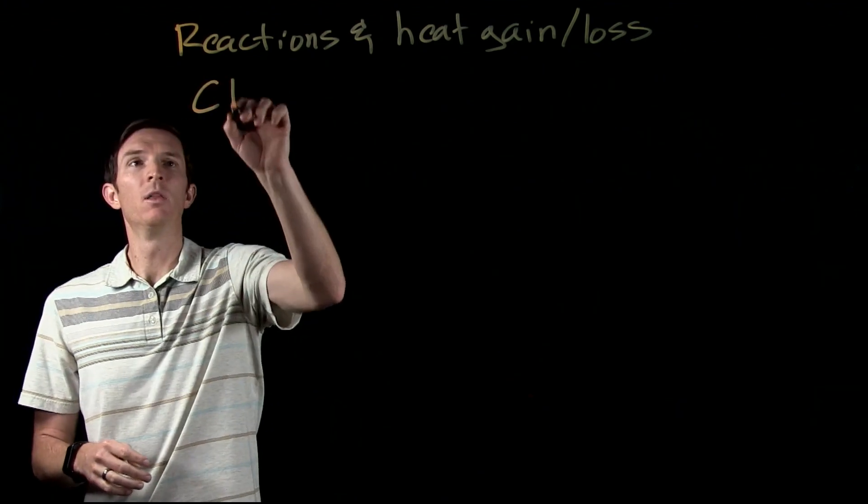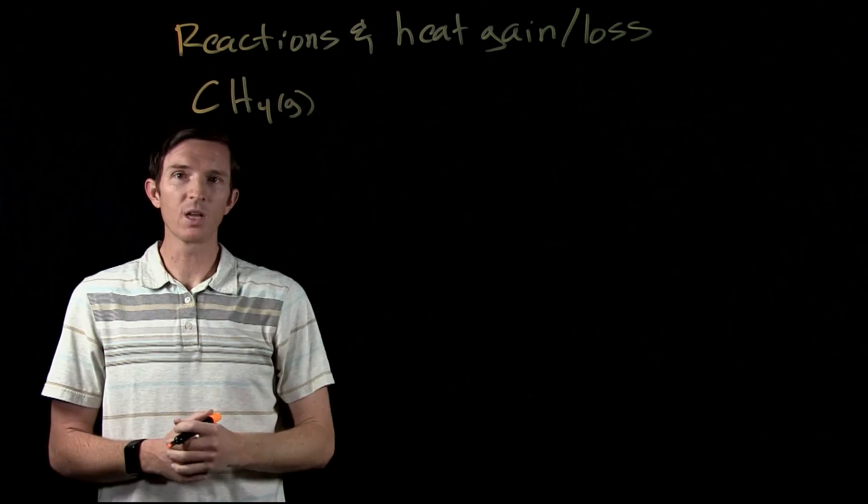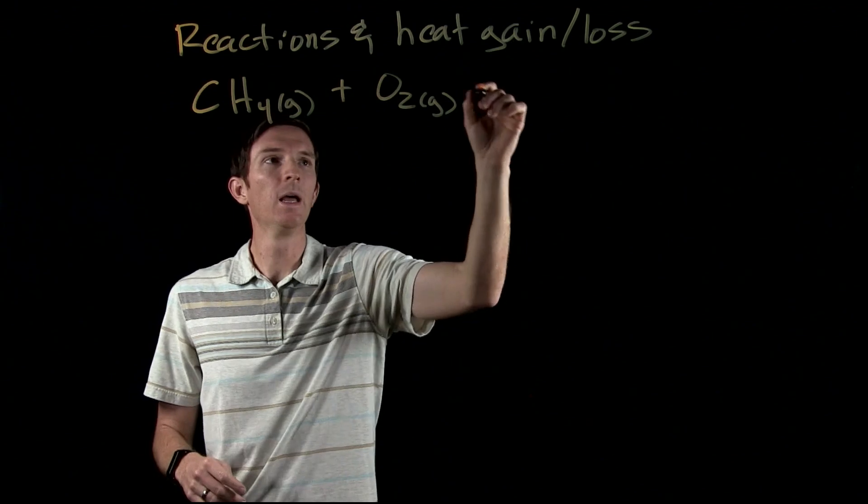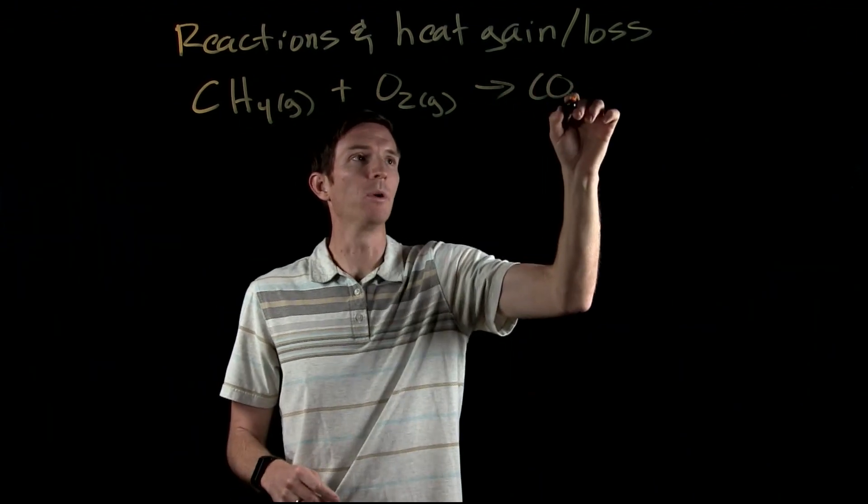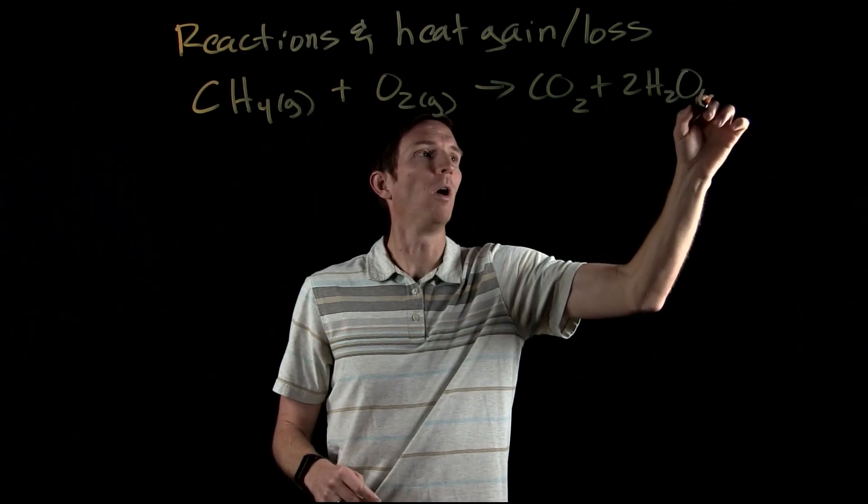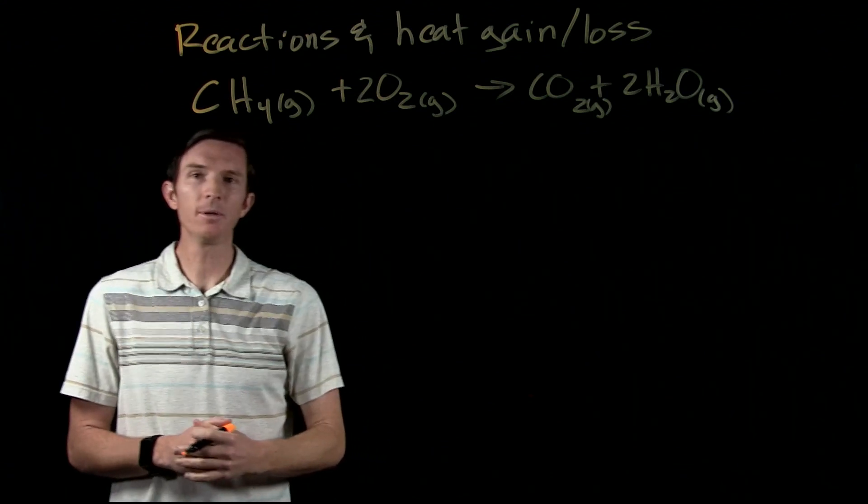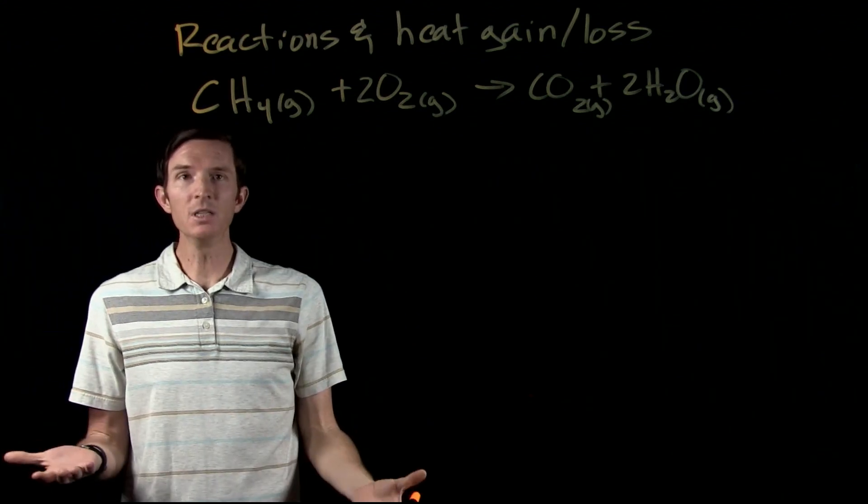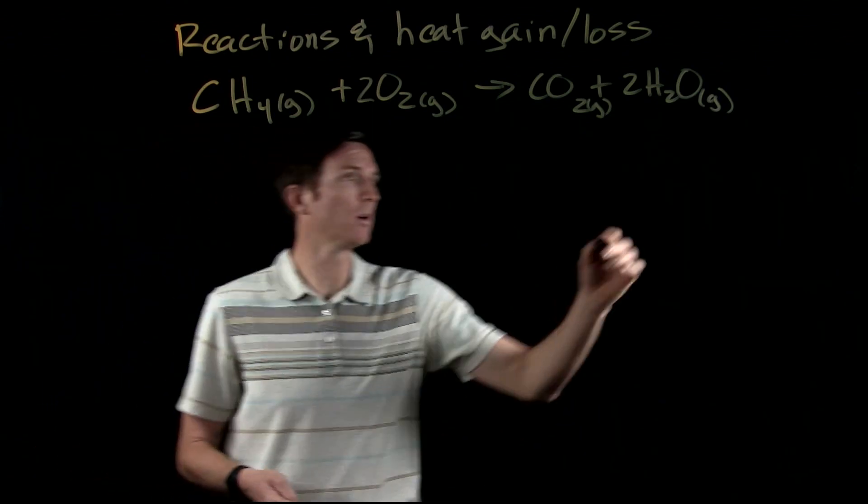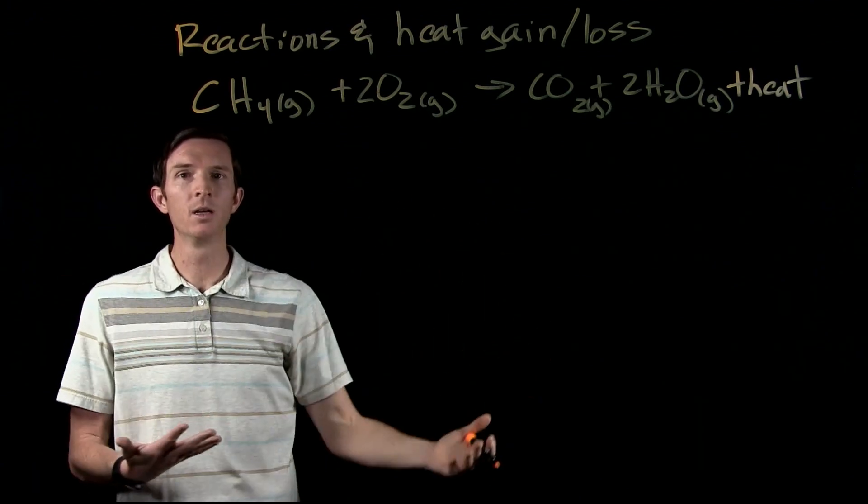Let's look at a couple of examples. The first one: we have methane, which is simply natural gas, and we turn our stove on. It's going to produce carbon dioxide and water. We let this reaction happen. From experience we know that this reaction gets warm and produces heat, so we can say it's going to release heat.